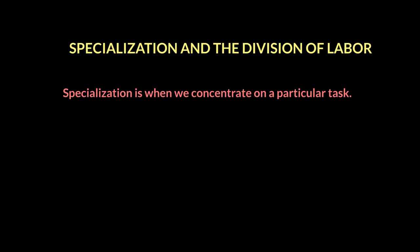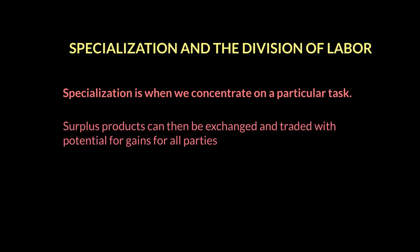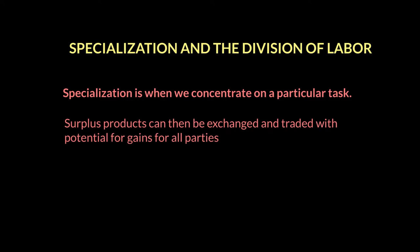When we concentrate on a particular task, the idea is that you will have what we call surplus output. That surplus output can then be sold and exchanged in the market with potential for gains for all parties. For example, if I am producing something, I can make more of it, sell it in a market, get some money, and use that money to buy something else.